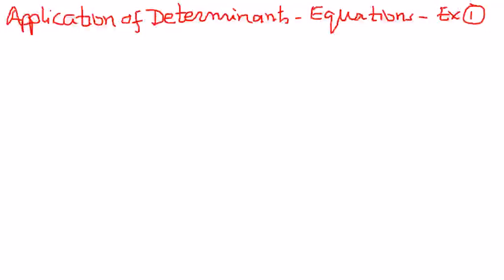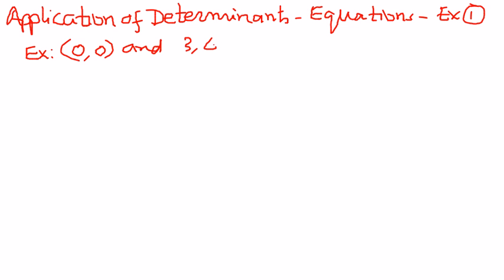Welcome to my presentation. In this presentation, let us try to find the equation of a straight line using determinants. Let us say two points are given to us, and the two points are (0, 0) and (3, 4), and we want to find the equation of the straight line using determinants.